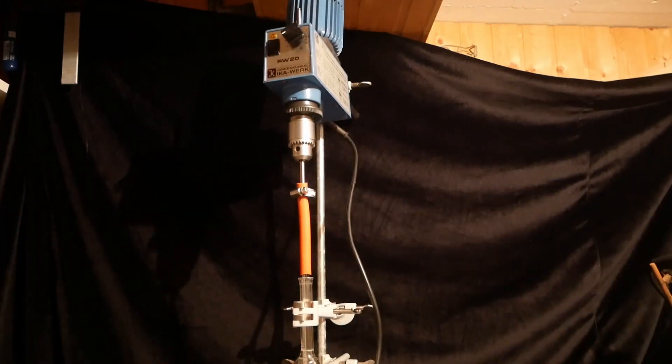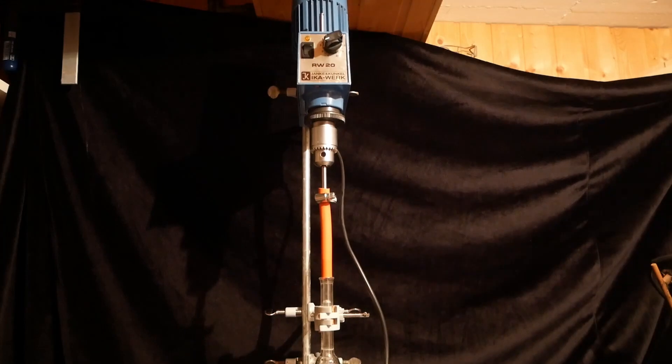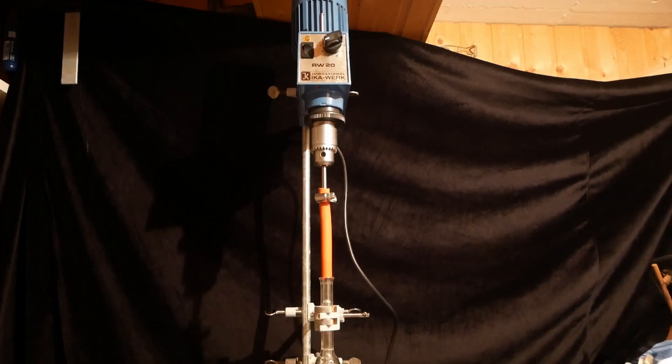Perfect alignment is very hard to achieve, so a rubber tube is placed between the motor and the stirrer to give a bit of flexibility to the connection.